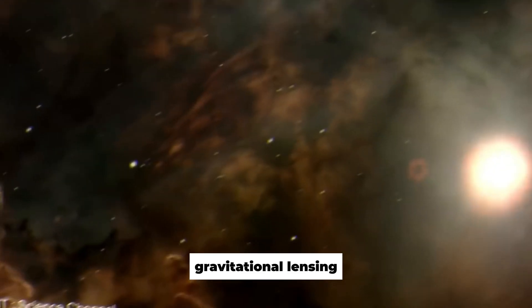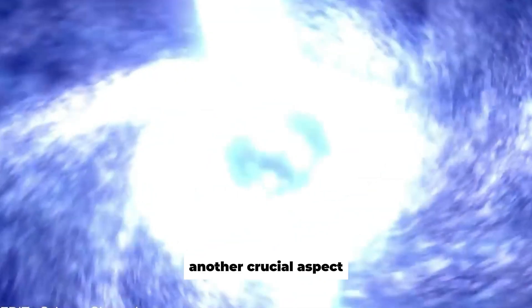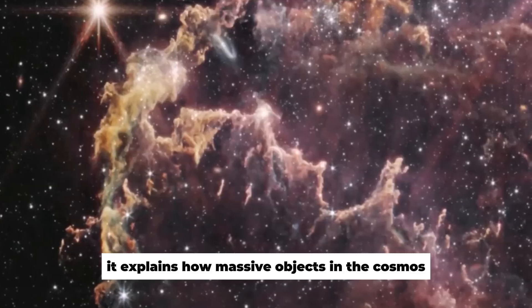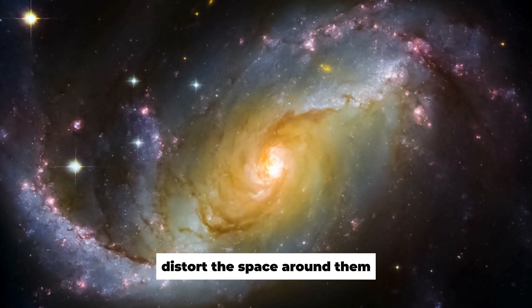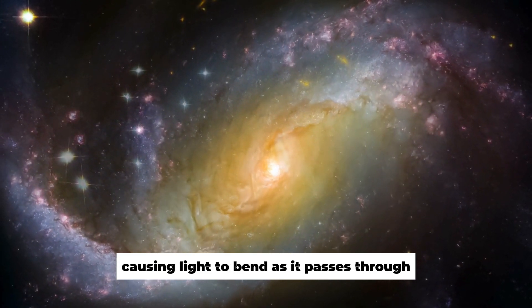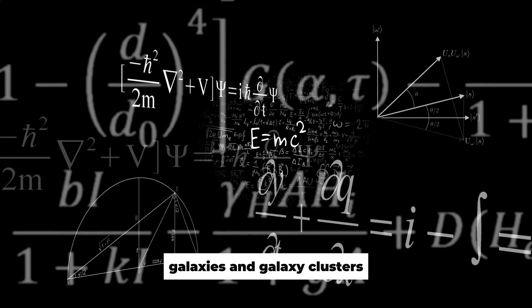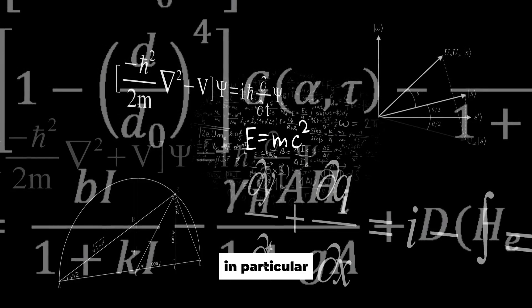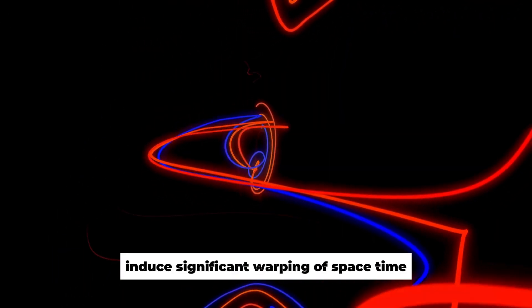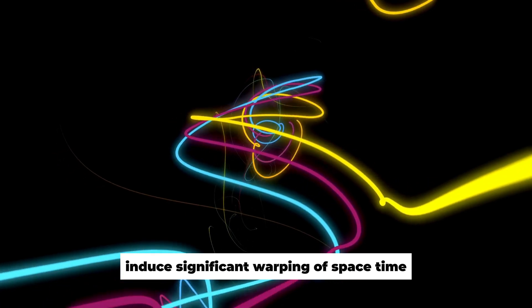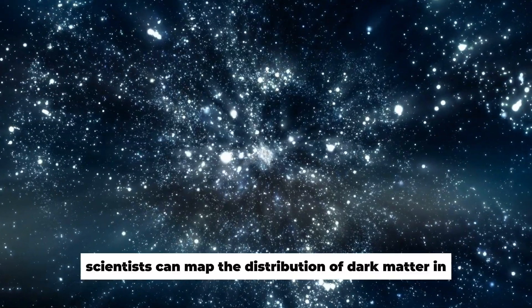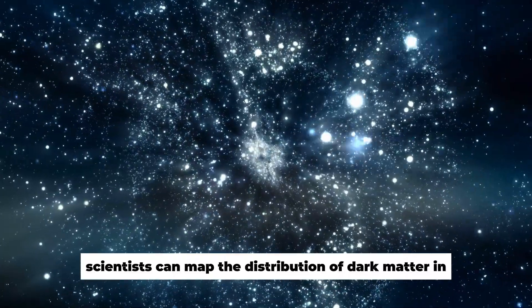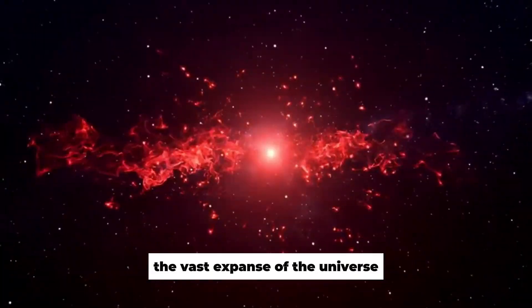Furthermore, gravitational lensing, another crucial aspect, contributes to this understanding. It explains how massive objects in the cosmos distort the space around them, causing light to bend as it passes through. Galaxies and galaxy clusters, in particular, induce significant warping of space-time. By observing the effects of gravitational lensing in Webb images, scientists can map the distribution of dark matter in the vast expanse of the universe.